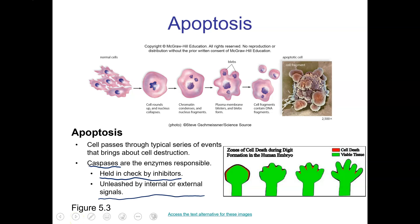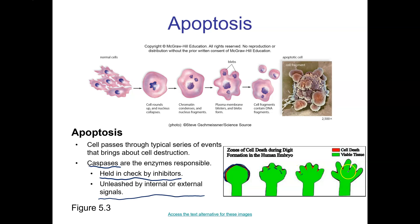Here is a picture of a human embryo hand. Initially we have a large area with lots of tissue. As the embryo develops further, we form those fingers, and the tissue between those fingers is broken down through apoptosis, giving us those nice normal finger structures.